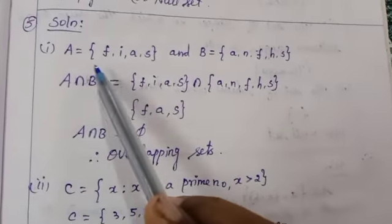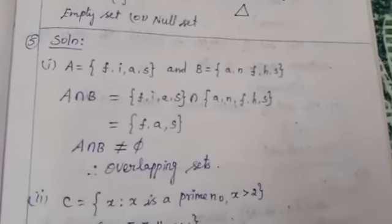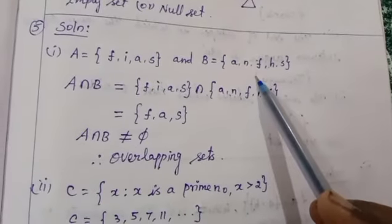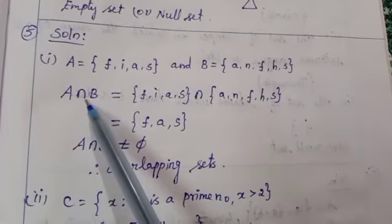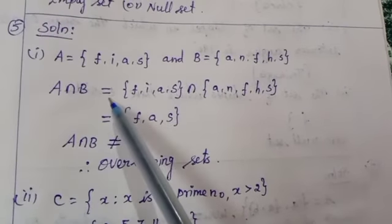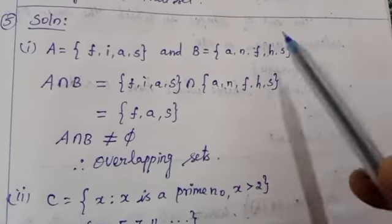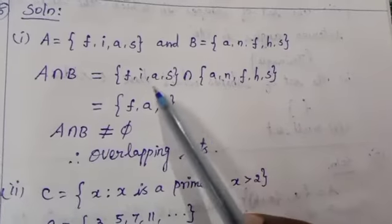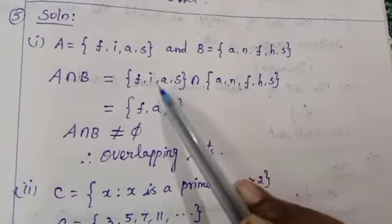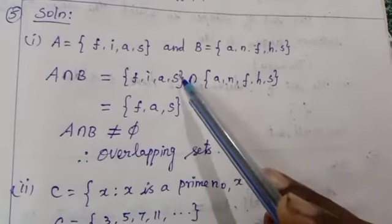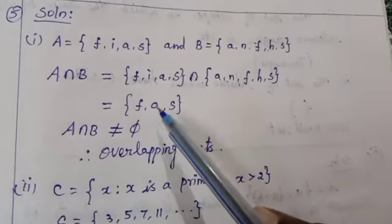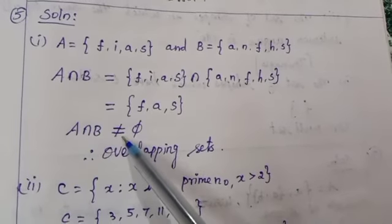For this problem, A is equal to {F, I, A, S} and B is equal to {A, N, F, H, S}. We have to find the common elements using the intersection symbol. A intersection B: common elements are F — here and here — then A. For I, it lies in set A but not in set B, so it is not common. So common elements are F, A, S.